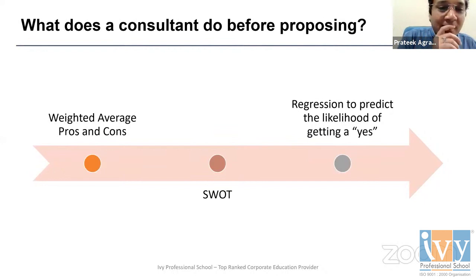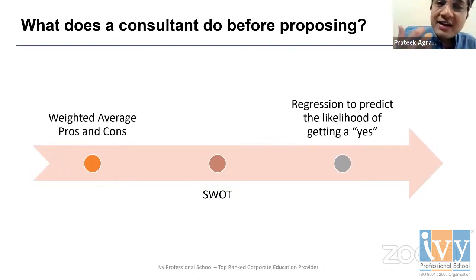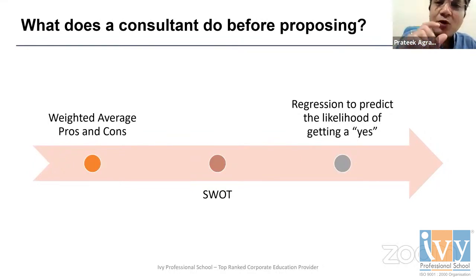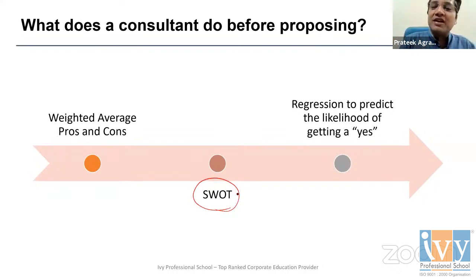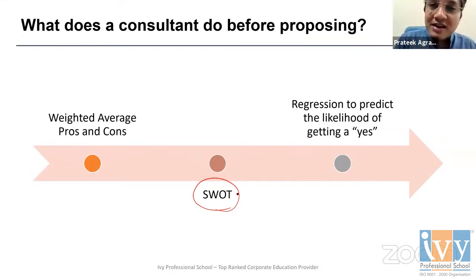Before proposing, I wanted to get the 'yes.' Since she was also one of my best friends, I had some data around her. The first thing I did was a pros and cons analysis — an advantage and disadvantage analysis — and then I gave each pro and con a weight, like importance or priority, making it a weighted pros and cons analysis. Then I did a SWOT analysis: Strengths, Weaknesses, Opportunities, and Threats — similar to what you'd see done for a new cricket player in the newspapers.